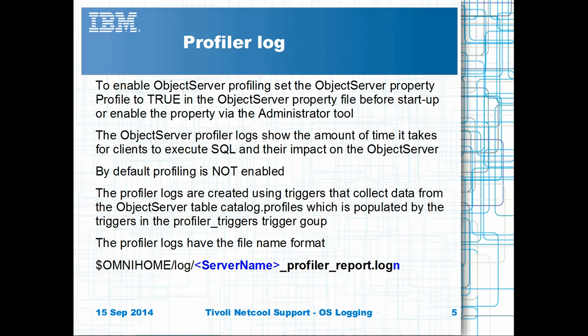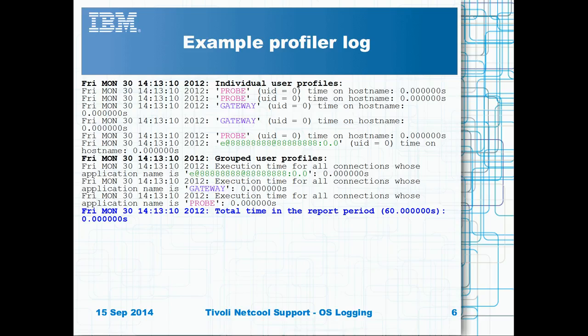The Profiler Logging needs to be enabled as it is disabled by default. It is best practice to have Profiler Logging enabled. You need to enable the Profiler triggers as well as the Profile property for the profiling data to be logged. Once enabled, the details of clients connected to the Object Server are logged, both as individual connections and grouped by type. The overall Profiler usage is logged as a total per IDUC period, which is 60 seconds by default.